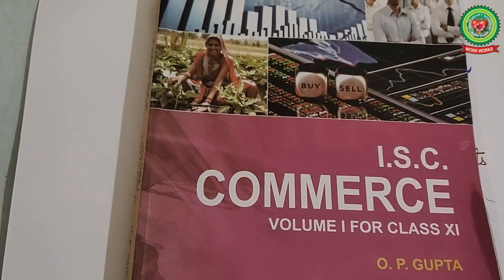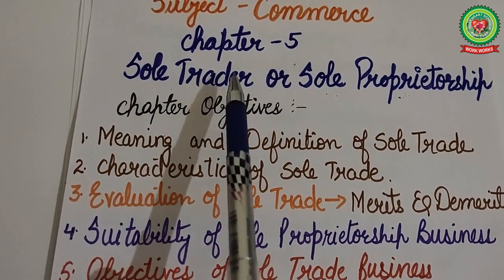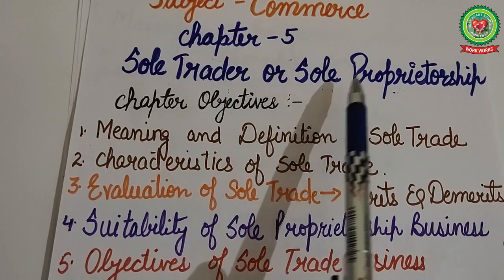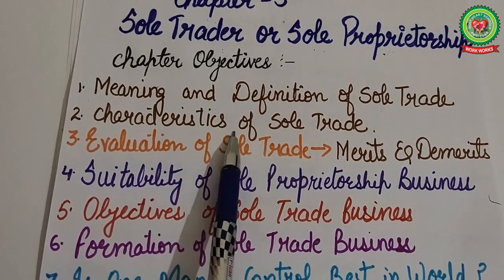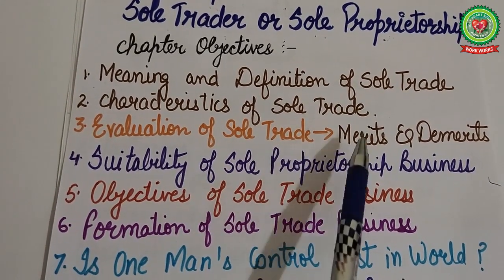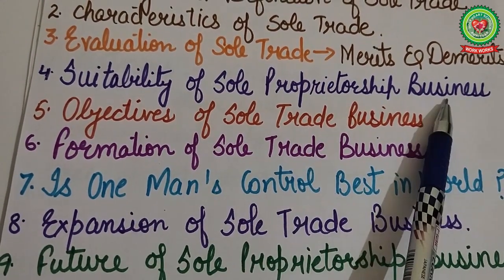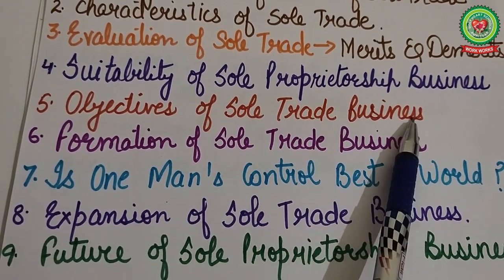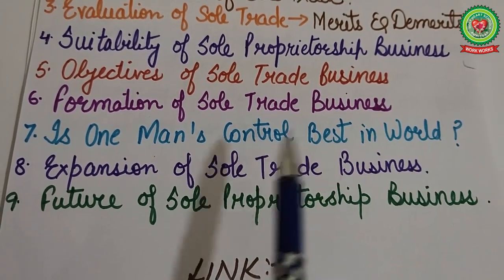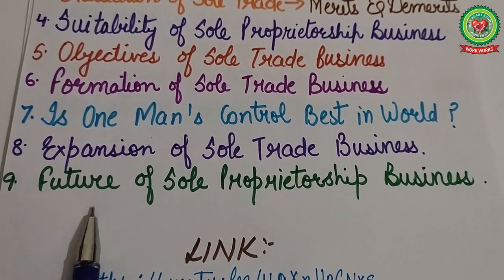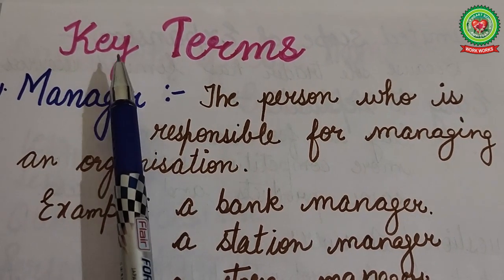Hello students, hope you are well and working hard to achieve your goals. Yesterday we had started Chapter 5 on sole trader and sole proprietorship, where we discussed the meaning, definition, characteristics, and evaluation of sole trade — its merits and demerits. Today we will discuss the suitability, objectives, formation, one man's control, expansion, and future of sole proprietorship business.